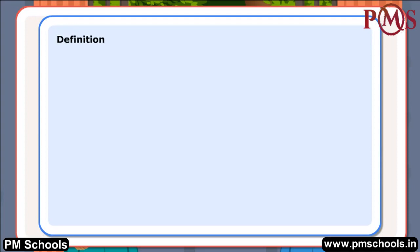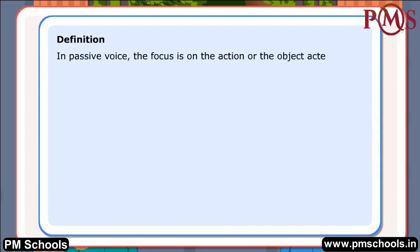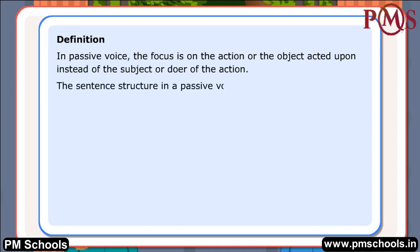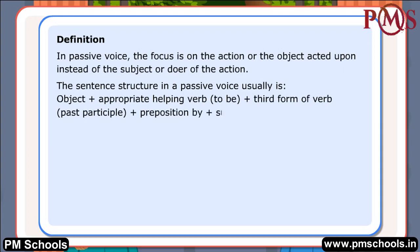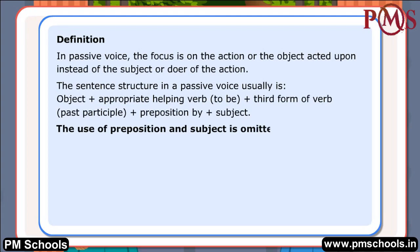Definition: In passive voice, the focus is on the action or the object acted upon instead of the subject or doer of the action. The sentence structure in a passive voice usually is: object plus appropriate helping verb 'to be' plus third form of verb (past participle) plus preposition 'by' plus subject. The use of preposition and subject is omitted sometimes in passive voice.